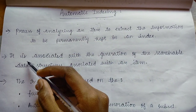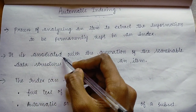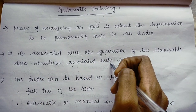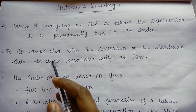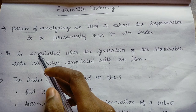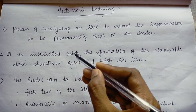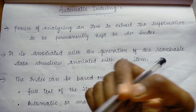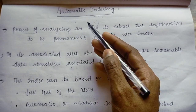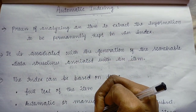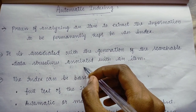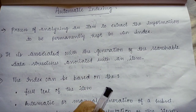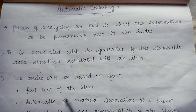Automatic indexing is associated with the generation of the searchable data structures associated with an item. For example, this pen is associated with the generation of searchable data structures — if you search for a pen, you'll get all the brands and how many brands there are of pens, which are associated with that item.